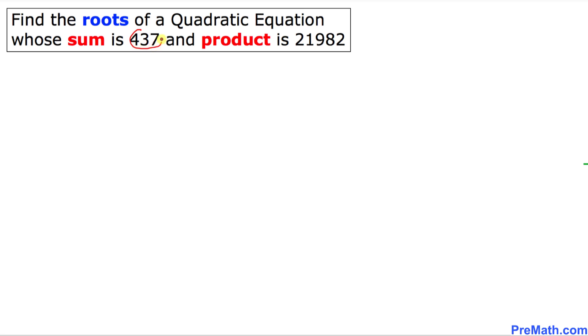We know that the sum is 437, so I am going to call S stands for sum. S is 437 and our product is 21982. I am going to call P as a product is 21982.